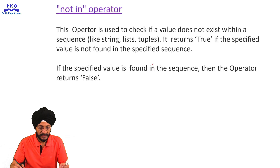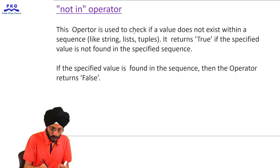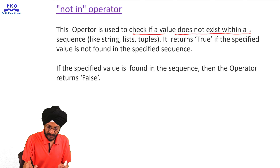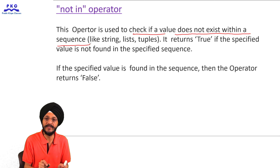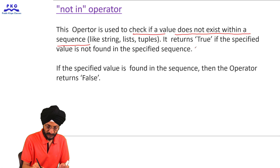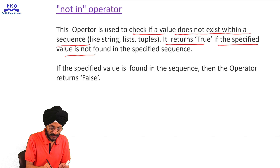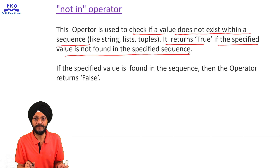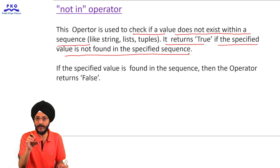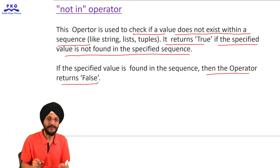Now we will discuss the 'not in' operator. This operator is used to check if a value does not exist within a sequence — which may be a string, list, tuple, or dictionary. The 'not in' operator returns true if the specified value is not found in the specified sequence. If the value is found, the operator returns false.